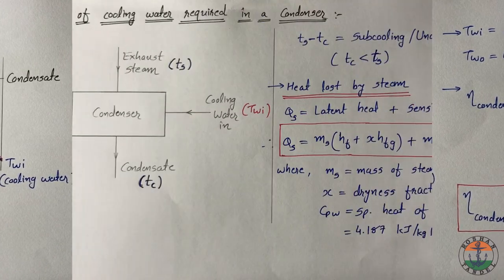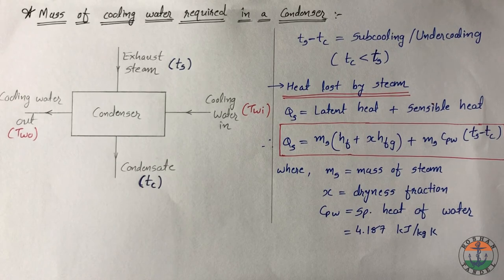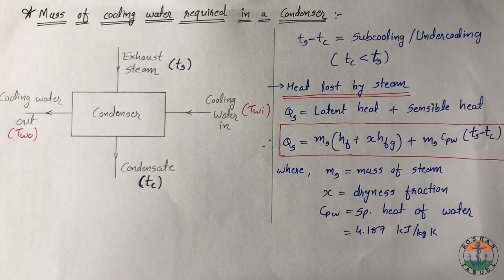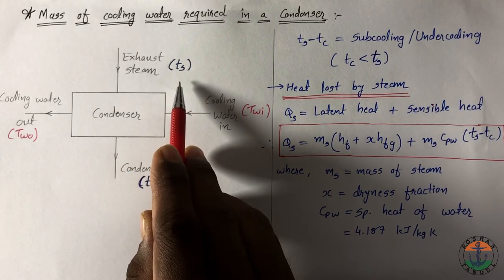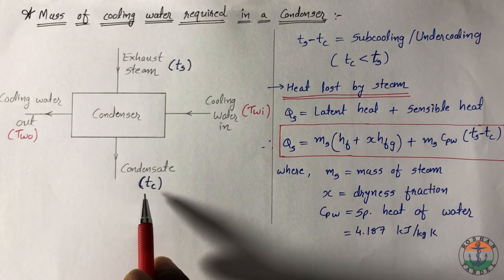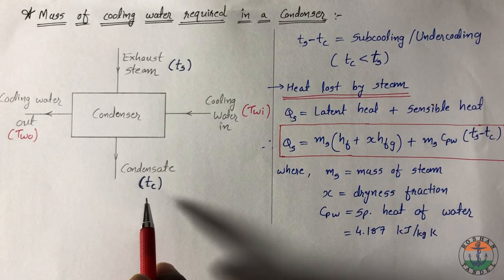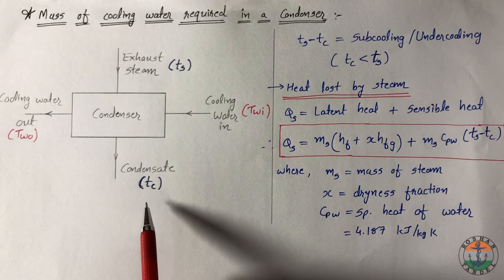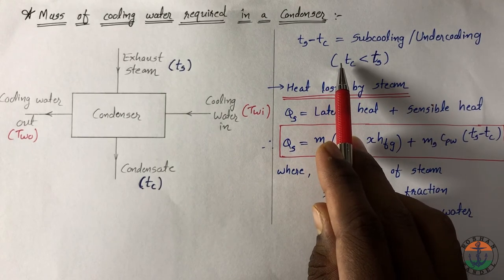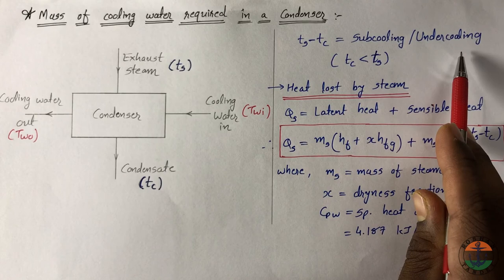Now how to calculate mass of cooling water required in the condenser. During condensation process, exhaust steam releases its latent heat at constant temperature and pressure to the cooling water. Ts is the saturation temperature of exhaust steam. But sometimes condensate is subcooled. After subcooling, suppose temperature of condensate is Tc. In this case, Ts minus Tc is called subcooling or undercooling.